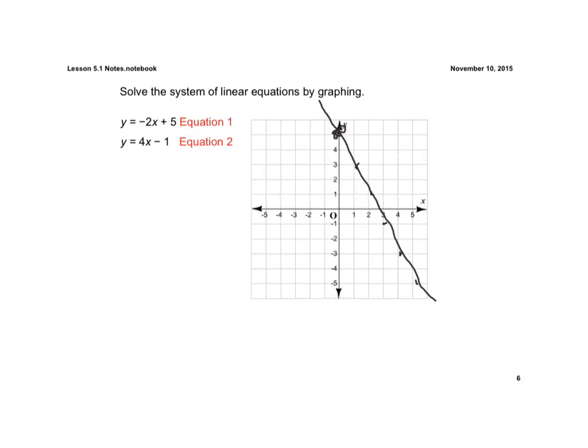Now I graph the second equation, which has a y-intercept of negative 1, and it goes up 1, 2, 3, 4 over 1. As you can tell, it has a common solution right here. We name that ordered pair (1, 3) because that's 1 on the x-axis and 3 on the y-axis.